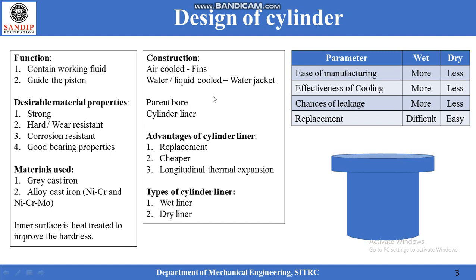The construction of a cylinder depends upon the type of cooling arrangement. If it is an air-cooled engine, fins are provided, which results in thinner walls of the cylinder. If it is a water-cooled engine, a water jacket has to be provided, which are basically passages for the flow of water. Due to the presence of the water jacket, the thickness of the wall of the cylinder will be higher.